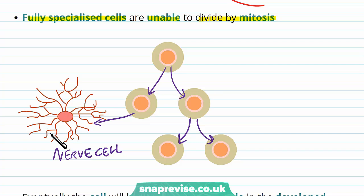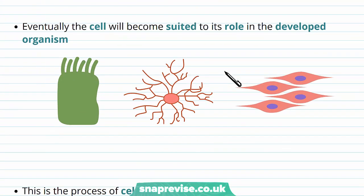This is why it can be quite dangerous, because a lot of neurons in the brain are so specialized that they're no longer able to divide and replace themselves. So if someone has a stroke or damages the brain, it's very hard to replace these cells and it can be life threatening. Eventually, whichever cell that is, it will become suited to its role in the developed organism. Once the baby grows and is born, it will have multiple different types of tissue with specific functions and they've all become very specialized.